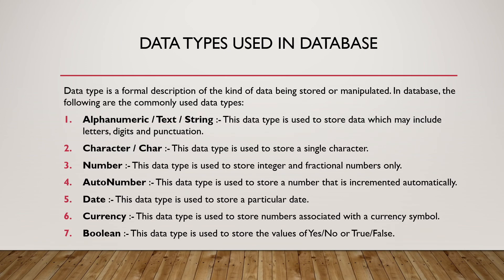The different data types used in a database are as follows. First, alphanumeric text or string — used to store data which may include letters, digits and punctuation. Character or char — used to store a single character. Number — used to store integer and fractional numbers only. Auto number — a number that is incremented automatically. Date — a data type to store a particular date. Currency — used to store numbers associated with a currency symbol. And lastly, boolean — used to store values yes or no, or true or false.